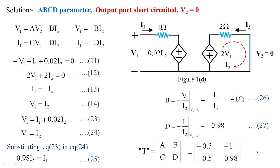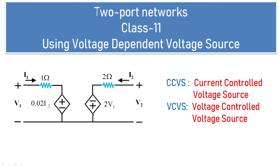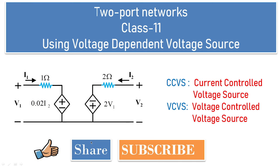As homework, please cross-check the ABCD parameters by converting the z parameters directly into ABCD parameters and verify if you get the same result. Post your answer in the chat box. In today's class we covered voltage controlled voltage source and current controlled voltage source in two-port networks. Please share, subscribe, and press the bell icon for future notifications.